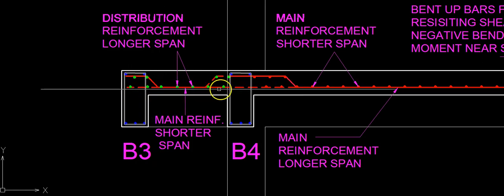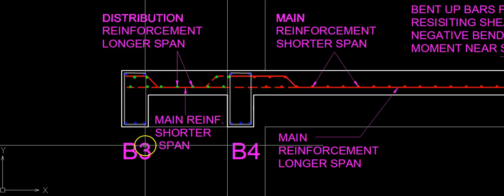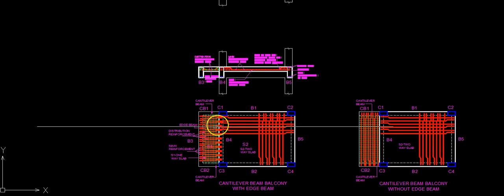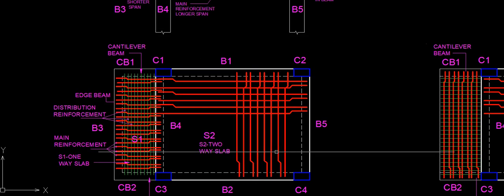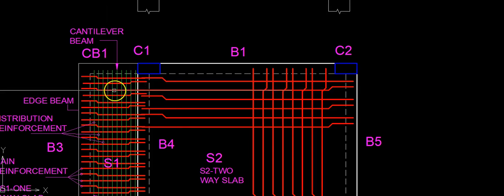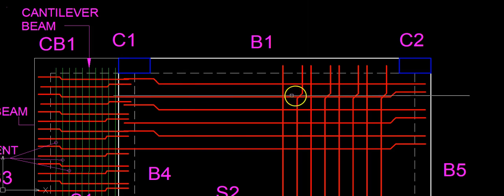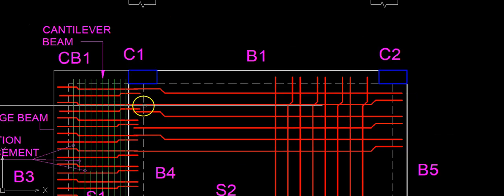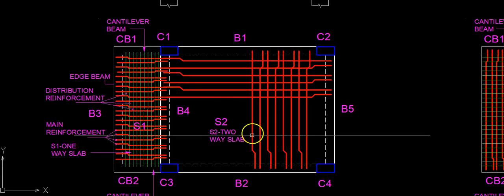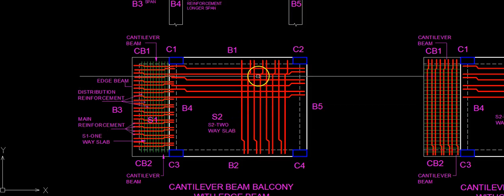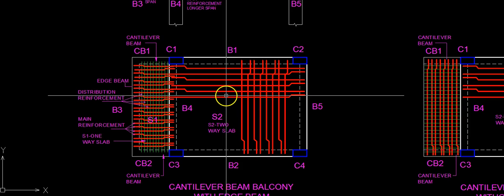This balcony slab is a one-way slab spanning between beams B3 and B4. The slab shown at the back is the slab of the room, which is a two-way slab with main reinforcement running in both directions — along the longer span and along the shorter span. The reinforcement in this slab is also bent up near the support to take the shear and to resist the negative bending moment created near the support.